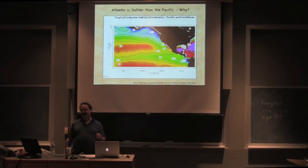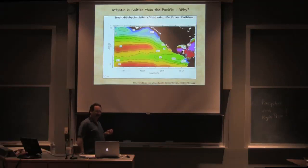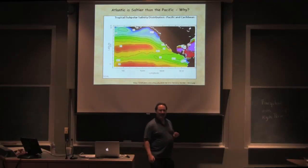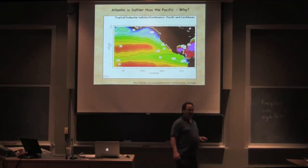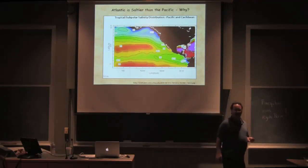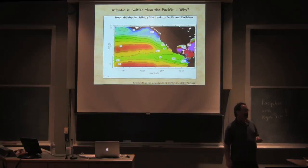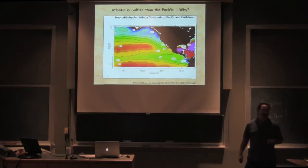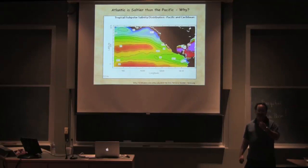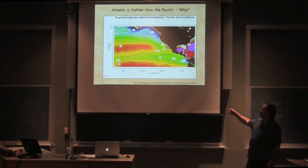Prior to about 4 million years ago, there was no salinity difference between the Atlantic and the Pacific. The answer is Panama. The uplift of Panama separated the Atlantic and the Pacific — but how does that create and maintain the salinity difference?